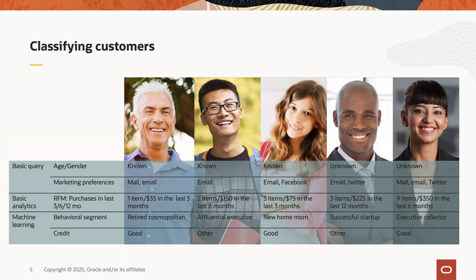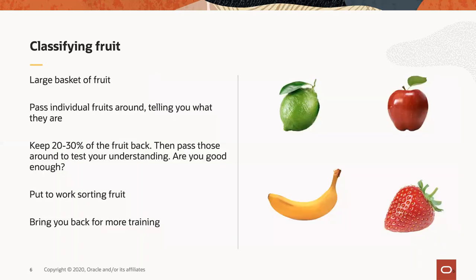The way we actually make predictions about customer credit in this particular scenario is because we have an existing set of customers with existing information about their credit suitability. We use machine learning classification techniques to look at that data, understand what the patterns are, and be able to use that understanding to make predictions in the future. Let's take a look at how classification as a general technique actually works, using a totally non-technical, non-computer example — that of classifying fruit.